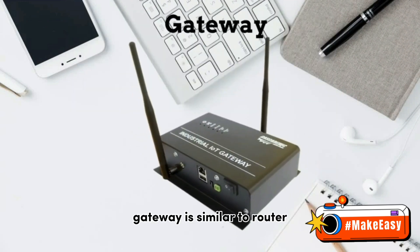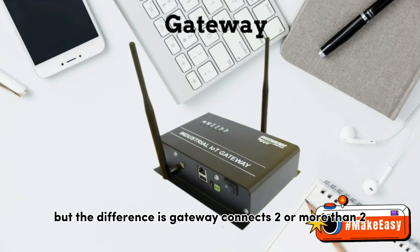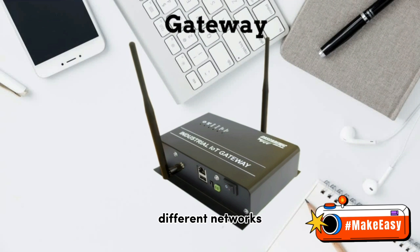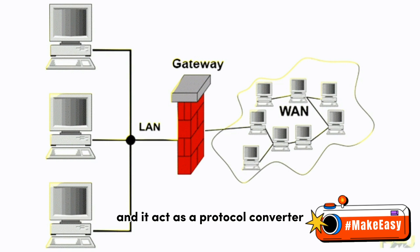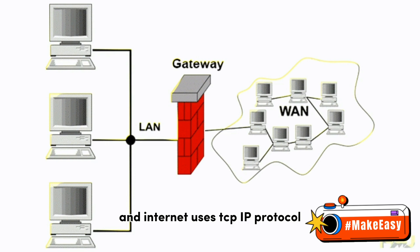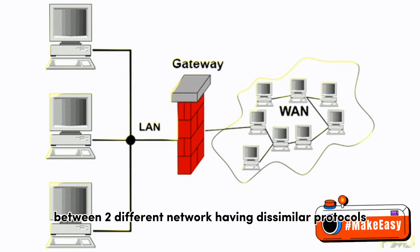Gateway is similar to router because it is also an intelligent device that works with IP address, but the difference is gateway connects two or more different networks having dissimilar protocols. Gateway provides internet access to a local area network and acts as a protocol converter. For example, LAN uses Ethernet protocol and the internet uses TCP/IP protocol, so we use gateway as an intermediary to make communication possible between two different networks having dissimilar protocols.